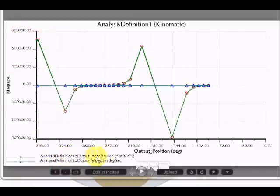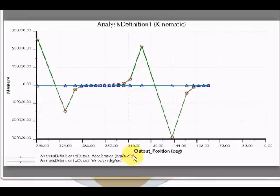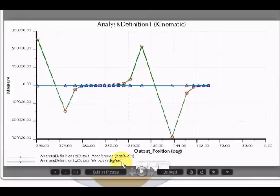Measure can be the output acceleration in degrees per second square with the proper units applied. And output velocity will be degrees per second with the proper units applied.